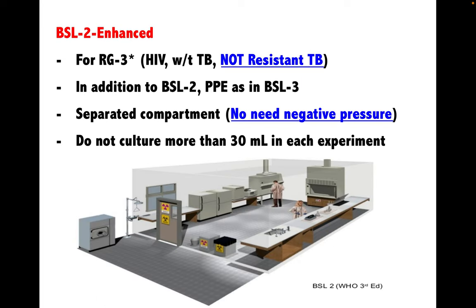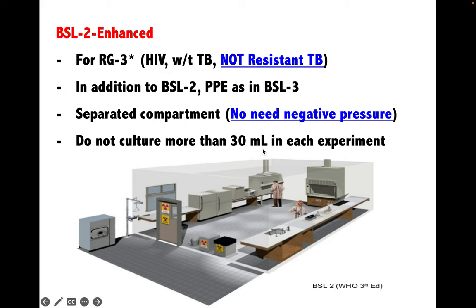There is an extra level recognised as BSL 2 enhanced, which is a higher safety level than BSL 2 but much less than BSL 3, for working with certain pathogens classified as risk group 3 star — such as HIV and wild-type tuberculosis but not drug-resistant tuberculosis. In addition to BSL 2 requirements, BSL 2 enhanced PPE follows BSL 3 standards, and the venue must be in a separately compartmentalized area. However, it is restricted to a culture volume not exceeding 30 milliliters per experiment.